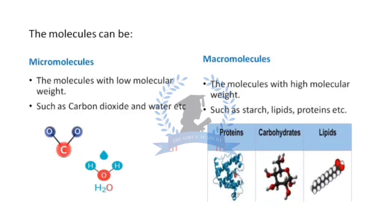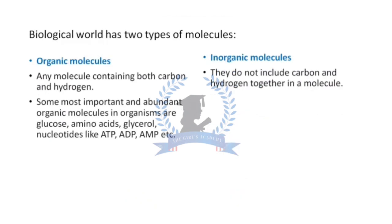Biological world has two types of molecules: organic molecules and inorganic molecules. Any molecule containing both carbon and hydrogen is called an organic molecule. Some most important and abundant organic molecules in organisms are glucose, amino acids, glycerol, nucleotides like ATP, ADP, AMP, etc. Glucose has carbon and hydrogen present in it. Amino acid has carbon, hydrogen, nitrogen. These are all organic molecules and these are the most important molecules found in any organism.